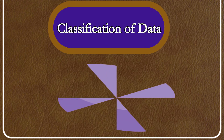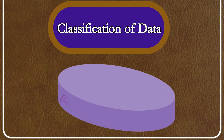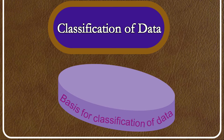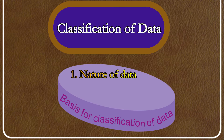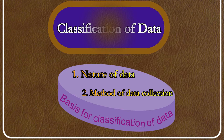We should first know what provides the basis for classification of data. Data can be classified on two grounds: one, the nature of data; and second, the method of data collection.